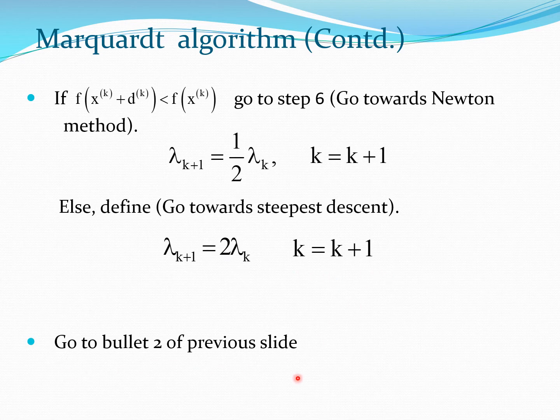Then you go back to the step where you calculated the gradient vector, take its norm, and proceed. So essentially this method at each step decides whether it should be more of a Newton method or more of a steepest descent method.